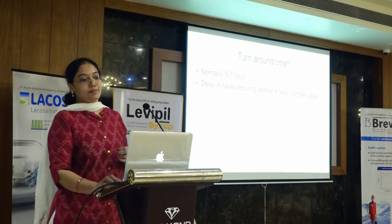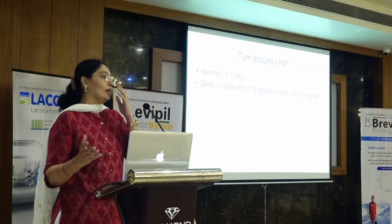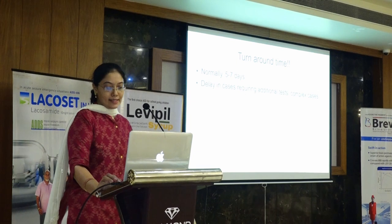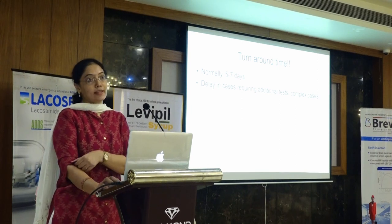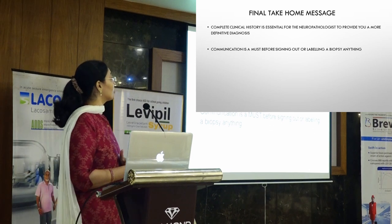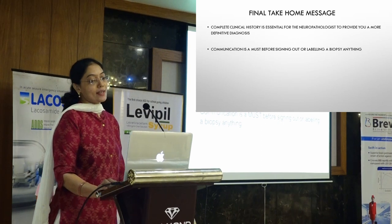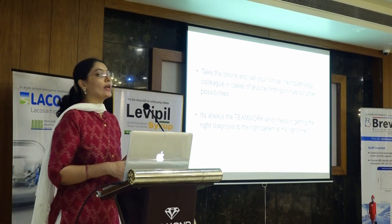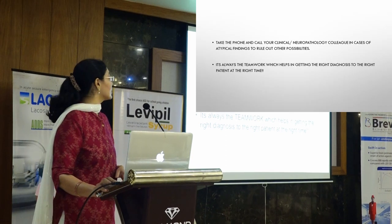Coming to the second point of what you expect from us — early reporting. Normally we require at least 5 to 7 days because the processing is different. The nerve has additional K-Pal processing which is processed entirely differently. At least 5 to 7 days is the maximum, unless it is a complicated case requiring more history, more investigations, or additional tests, where there can be delays. The final take-home message: complete clinical history is essential for the neuropathologist to provide a more definitive diagnosis. Communication is a must — before we sign out or label a biopsy, call your clinician or the neuropathology link. Any atypical finding, let us know. Remember, it is always teamwork which helps us get the right diagnosis to the right patient at the right time — there is nothing called 'it's my work or your work.' We are always a team to treat the patient.